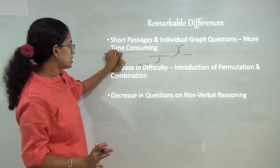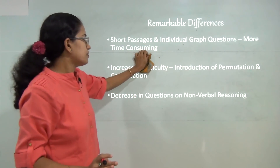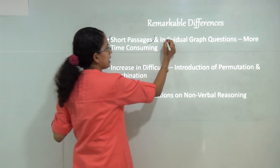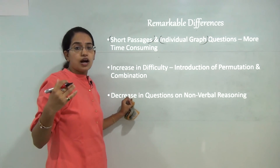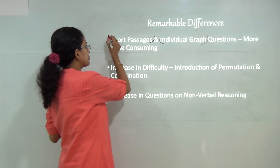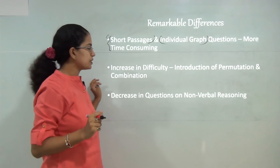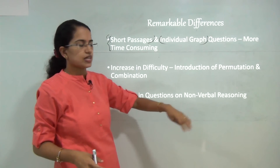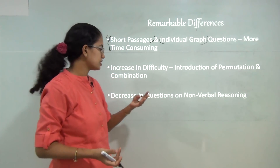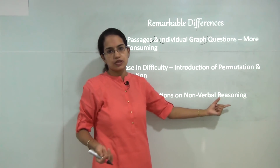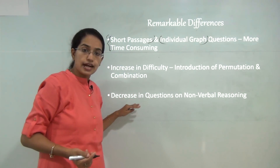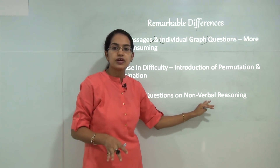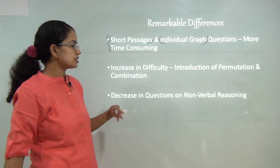The remarkable differences between the two papers: first, 2015 involved many short passages and individual graph questions, making it a highly time-consuming paper compared to 2014. You need to be very quick and practice a lot. There was also an increase in difficulty level, specifically in the mathematics section, with permutation and combination questions, and a decrease in non-verbal reasoning — though that does not mean non-verbal reasoning will decrease further this year.